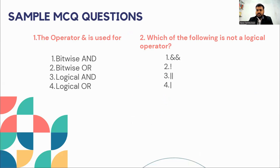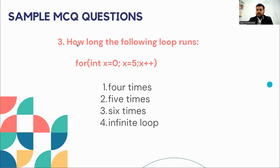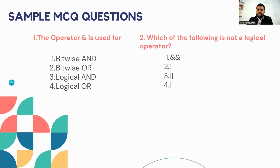The first question is: the operator '&' is used for — options are bitwise AND, bitwise OR, logical AND, and logical OR. The second question: which of the following is not a logical operator — options are '&&', '!', '||', and '|'. The third question: how many times does the following loop run — for integer x = 0, x <= 5, x++ — options are 4 times, 5 times, 6 times, and infinite loop. You need to send the answers to these questions in the YouTube chat or comment section.